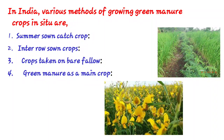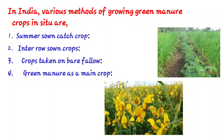The second method is the interro-sown crop. This is a quick-growing green manure crop sown along with the main crop between the lines — that is, intercropped. As shown in the picture, dhaincha is interropped with paddy.